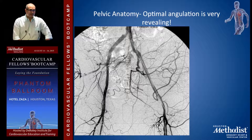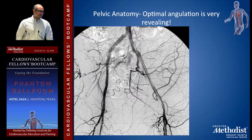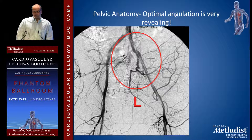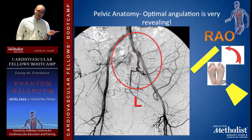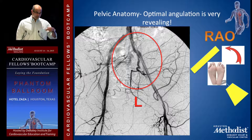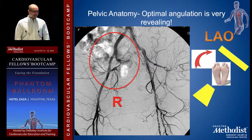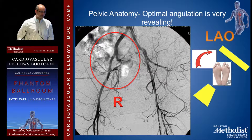In the pelvic anatomy, if you do an AP angiogram, you can see the aorta and the renals. But in the pelvis, you have to be mindful that optimal angulation is very revealing. If you want to see the left common iliac bifurcation and the hypogastric properly, it's best to have a little RAO contra oblique angle to open up that bifurcation. Similarly, to see the right common iliac bifurcation, you might want a little LAO.